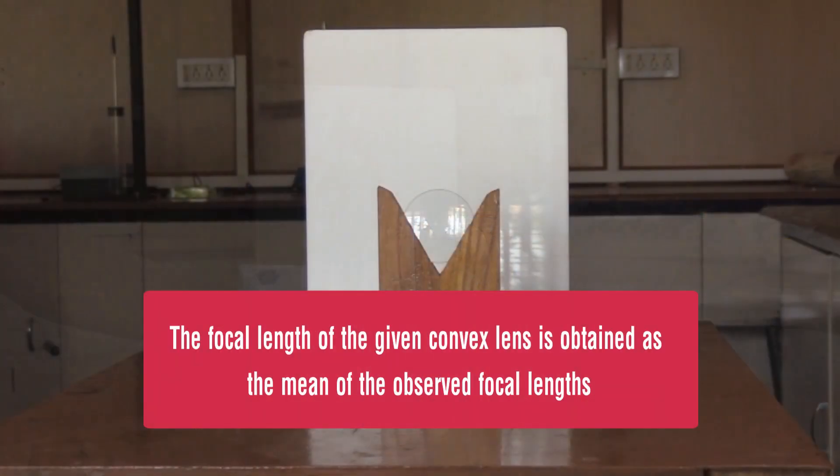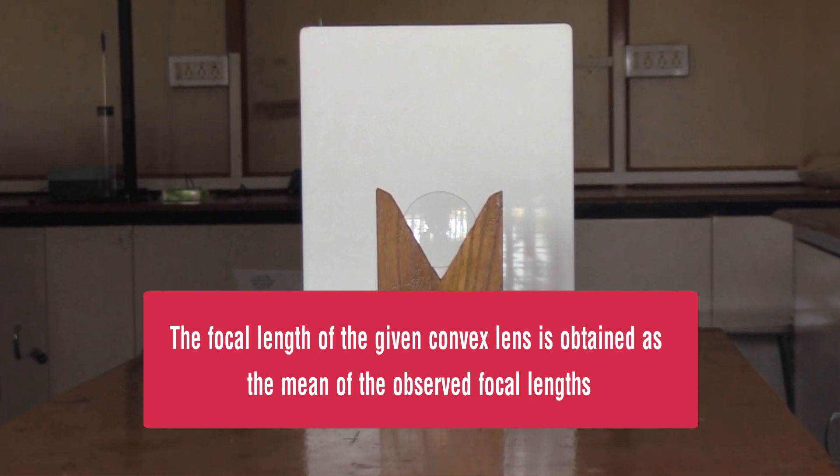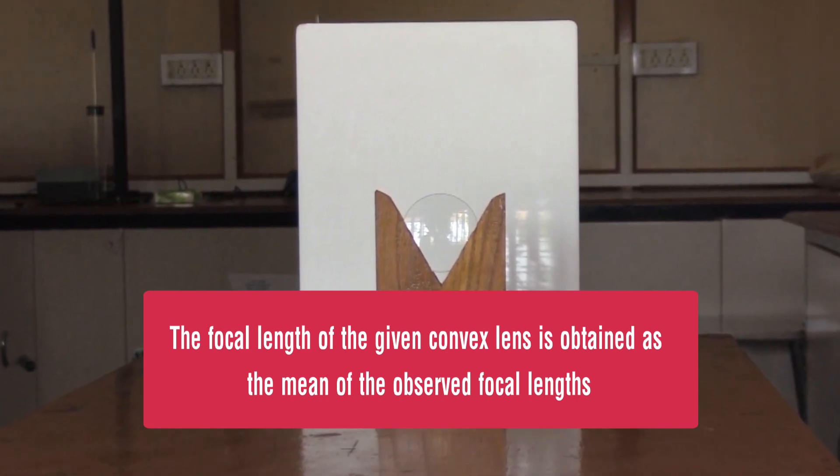Result: The focal length of the given convex lens is obtained as the mean of the observed focal lengths.